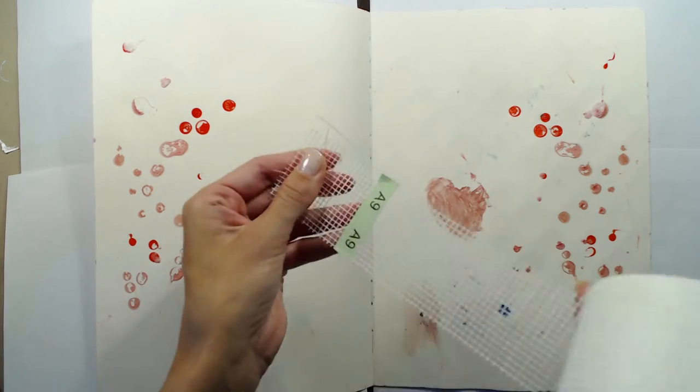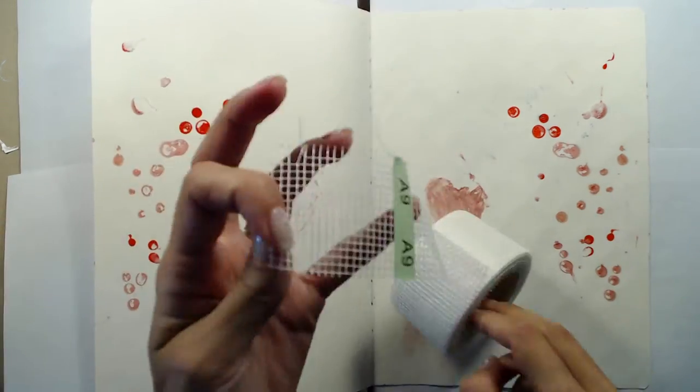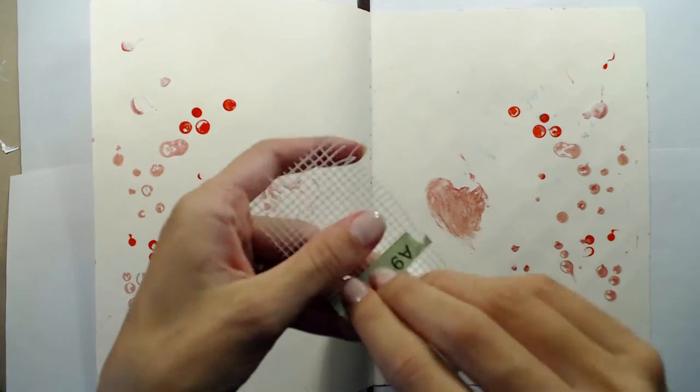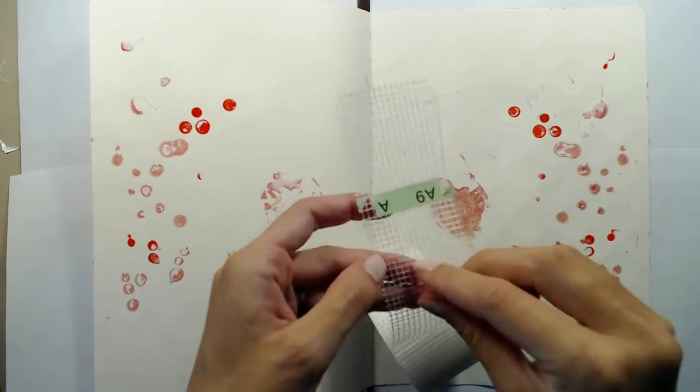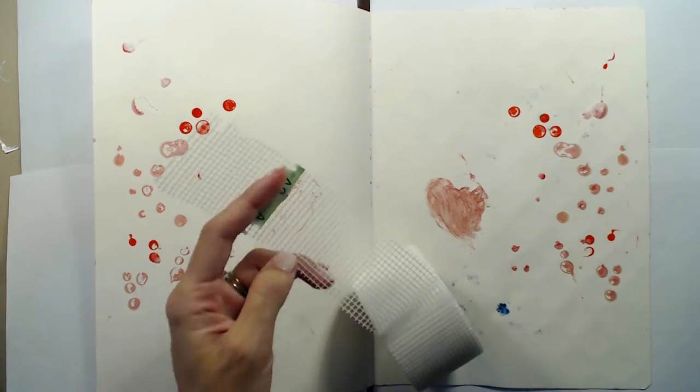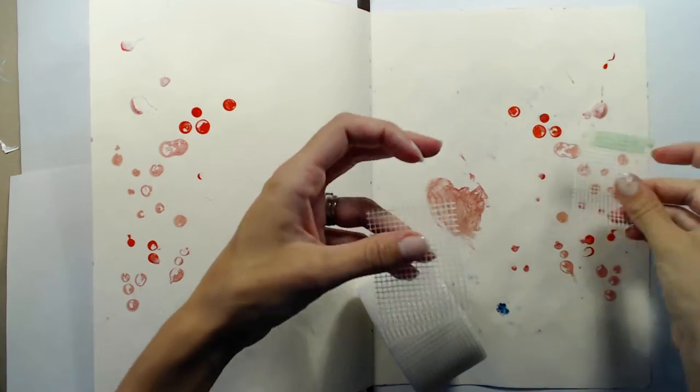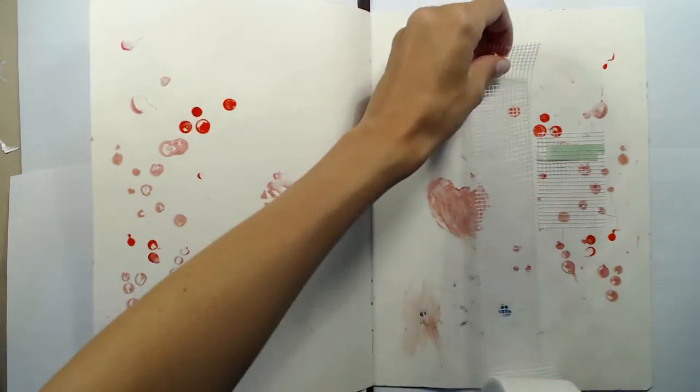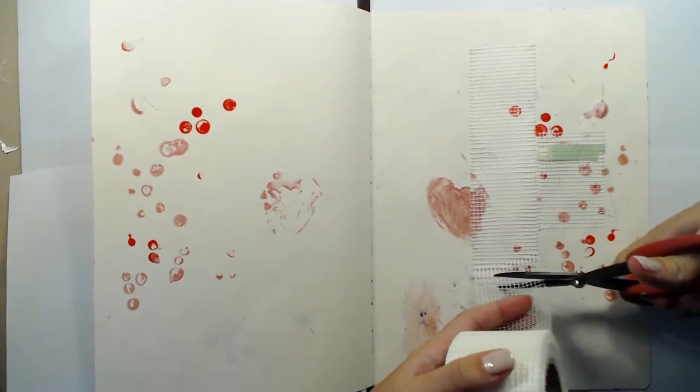A while back I stole this tape roll from my husband when he was putting up walls in our house, and I think it will give my page here a nice texture. It's actually some sort of tape that you use when hiding the edges between two drywall boards, and I'm taping this randomly over my spread, not really thinking too much about it.